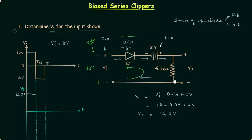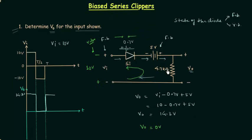Since the diode is reverse biased, I will replace it with an open circuit. When the circuit is open, there is no current through the load resistance, so the output voltage is simply equal to 0V. For the next half cycle the output is 0V, and again 14.3V for the following half cycle. This is how the output waveform looks — you can see the circuit is a negative clipper because we are clipping the negative portion of the waveform.